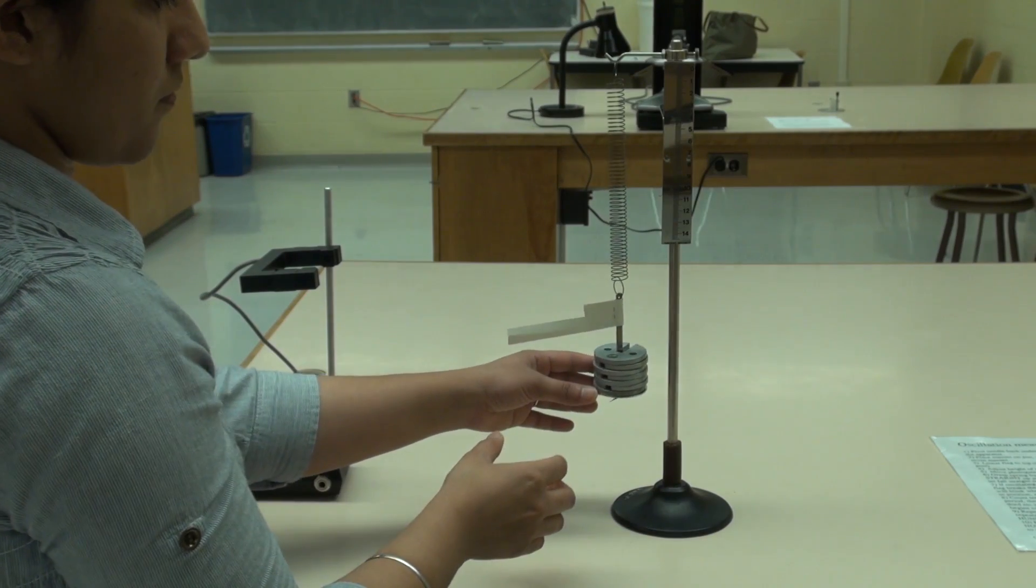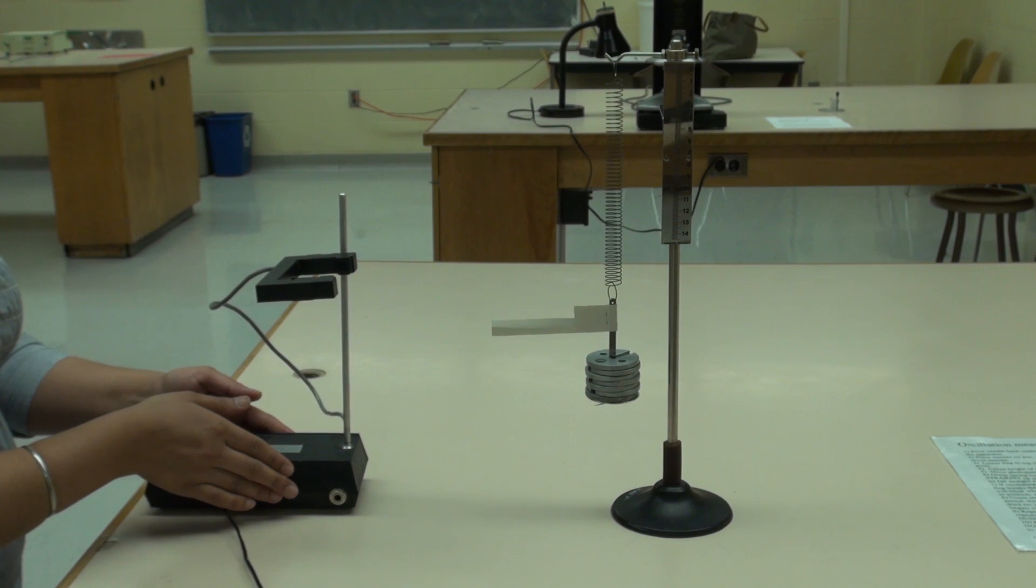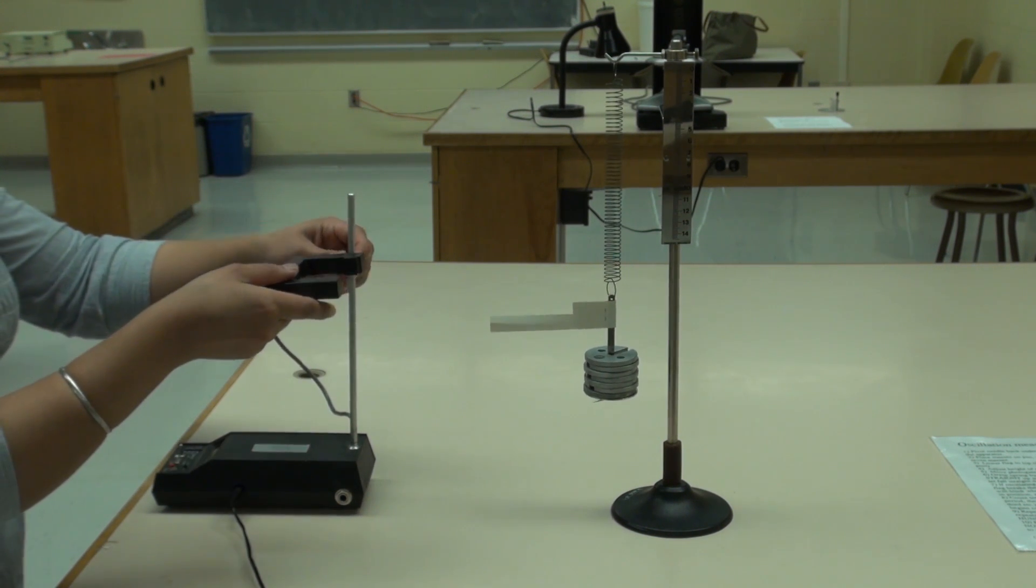Once you have set up and tested the photo gate, prepare the system to measure the period when 350 gram is on the pan.